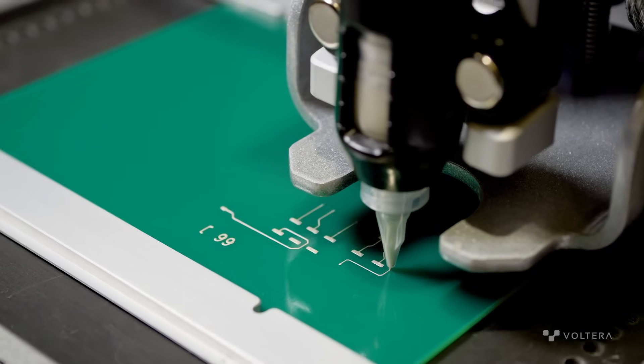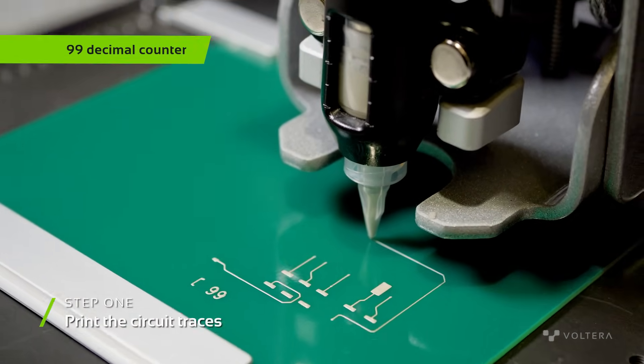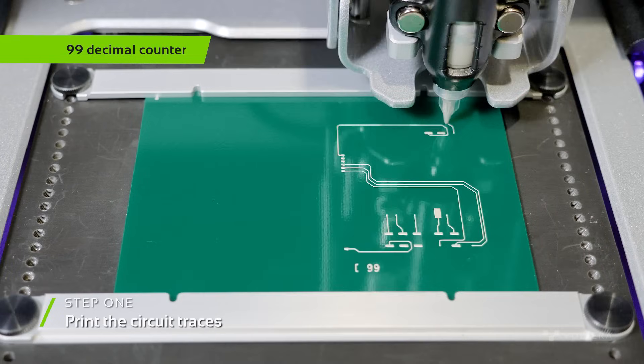The pulse generated from the circuit will be sent to our third and final PCB, a 99 decimal counter with two seven-segment displays.